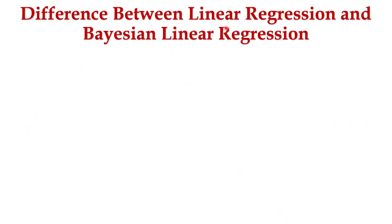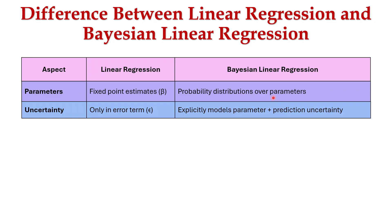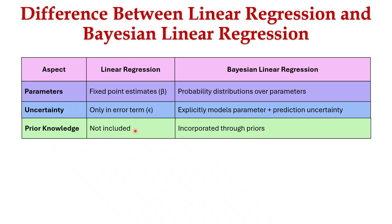Let's learn about the difference between linear regression and Bayesian linear regression across various aspects. For parameters: linear regression has fixed point estimates based on beta, whereas Bayesian linear regression has probability distributions over parameters. For uncertainty: linear regression uses an error term epsilon, whereas Bayesian linear regression explicitly models parameters with prediction uncertainty. Prior knowledge is not included in linear regression, whereas it is incorporated through the prior in Bayesian linear regression.